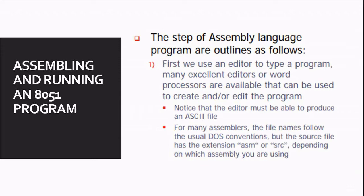In 8051 assembly language there are particular steps. The first step is that we need an editor. The editor is used to type the program. There are many excellent word editors, also called word processors, that can be used to create and edit programs. The editor must be able to produce the ASCII file, which is a particular extension type required for 8051 programming. Many assemblers follow the usual DOS conventions, and we also have source file extensions like .ASM and .SRC, but it depends on the assembler a particular user is using.